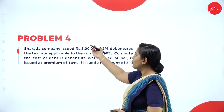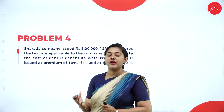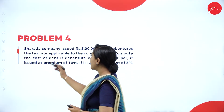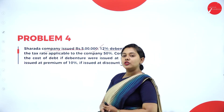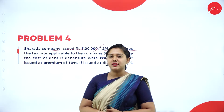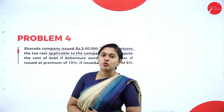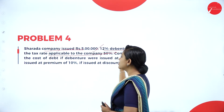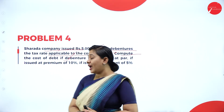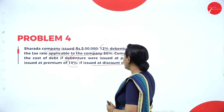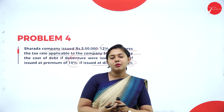Moving forward, Problem number 4 is similar to Problem 3. For your better understanding, one more problem is taken. Sharada Company issued rupees 5 lakh of 12% debentures. The tax rate applicable is 50%, so tax rate = 0.5. Compute the cost of debt if debentures were issued at par, at a premium, and at a discount of 5%.